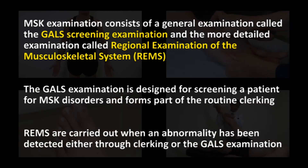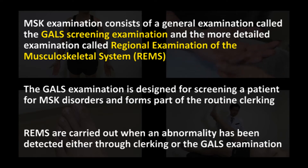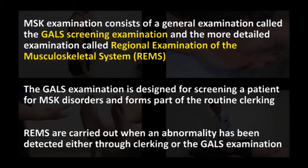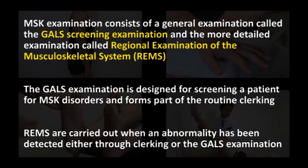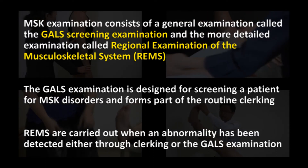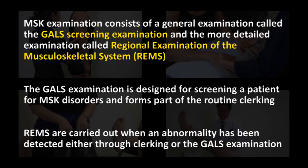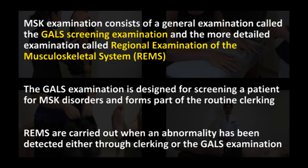Musculoskeletal examination consists of the general examination called the GALS screening examination, and the more detailed examination called regional examination of the musculoskeletal system, or REMS. The GALS examination is designed for screening a patient for musculoskeletal disorders and forms part of the routine clerking. REMS are carried out when abnormality has been detected either through clerking or the GALS examination.